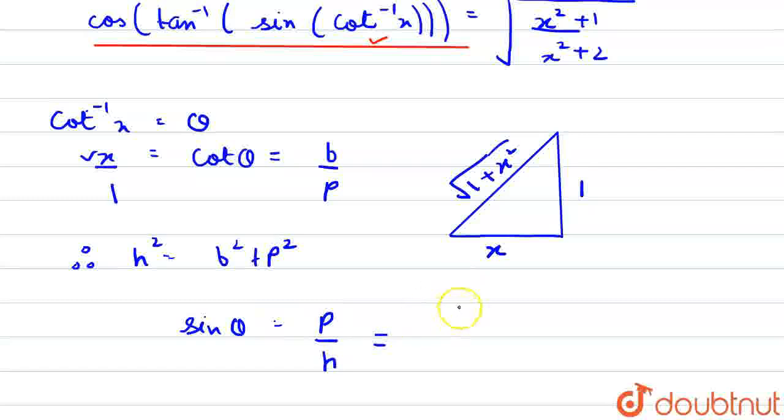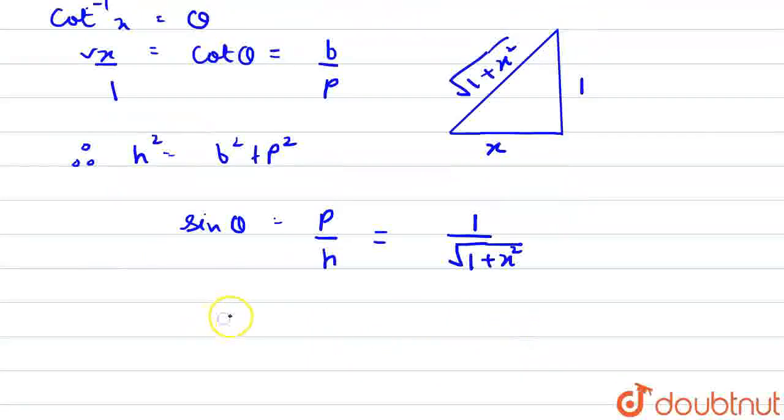So, we will get perpendicular is 1, 1 upon root of 1 plus x squared. We will take theta is equal to sin inverse 1 upon root of 1 plus x squared.